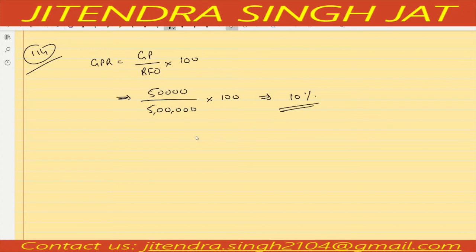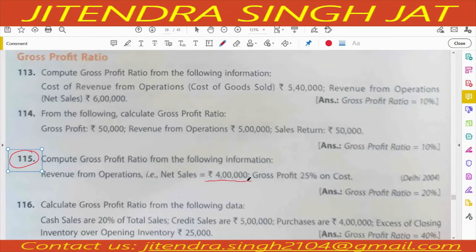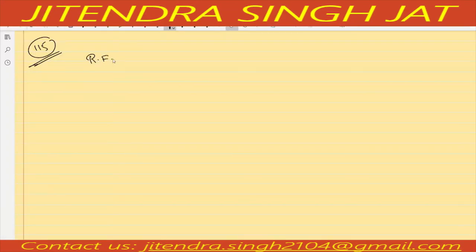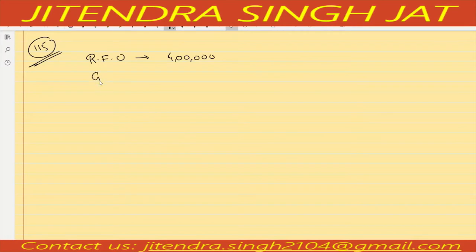Revenue from operations means net sales, and in net sales the sales return is already reduced. Question number 115: Compute gross profit ratio. Revenue from operations is given as four lakh. Gross profit is 25 percent on cost — meaning the profit is given on cost, not on sales.